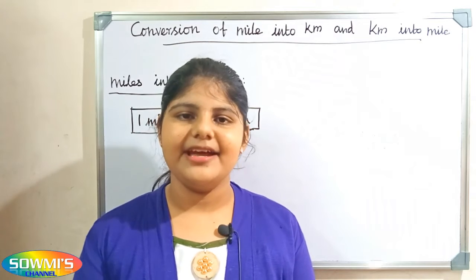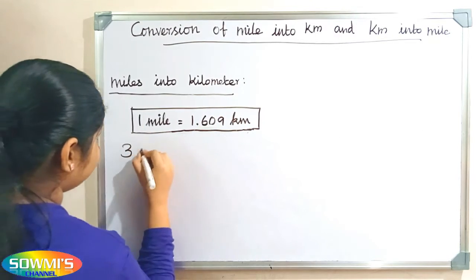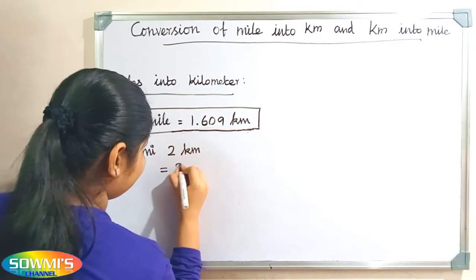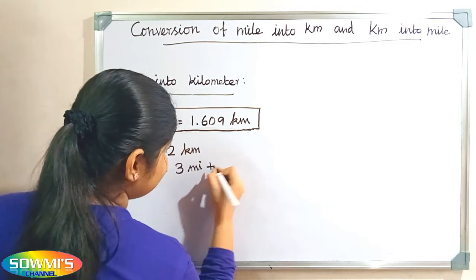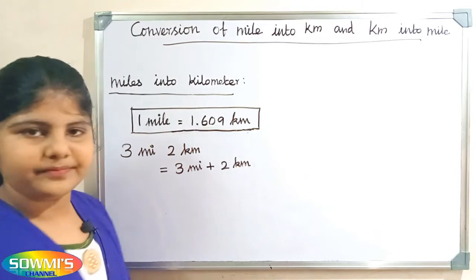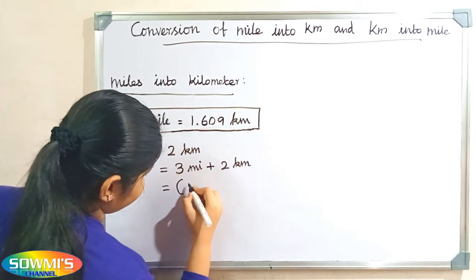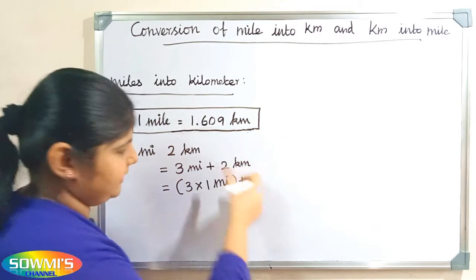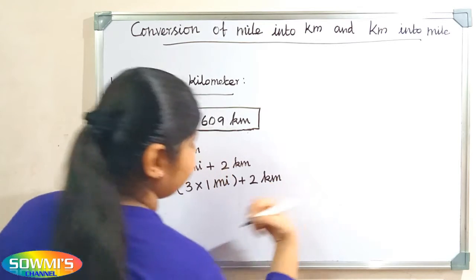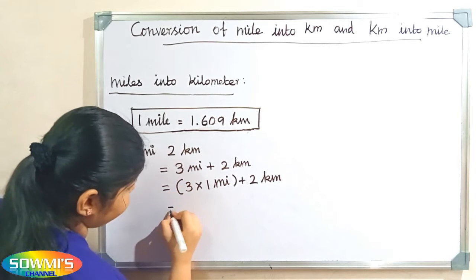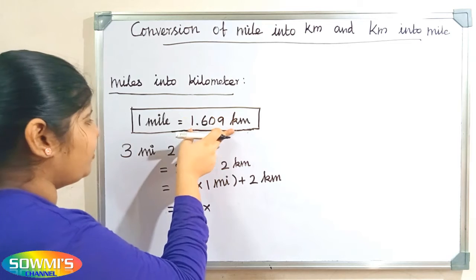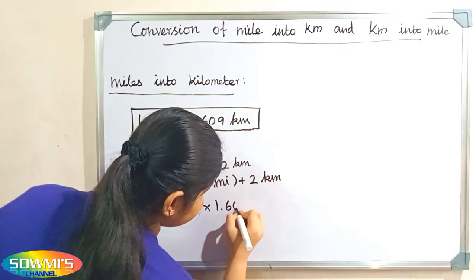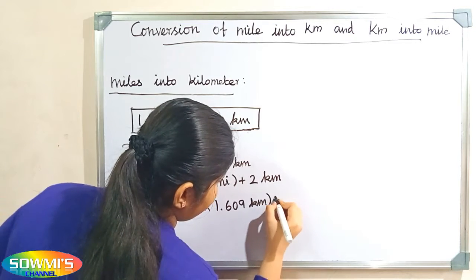Next we will take another example: 3 miles 2 kilometers. This can be written as 3 miles plus 2 kilometers. 3 miles can be written as 3 multiplied by 1 mile, plus 2 kilometers. Now we apply the formula and substitute 1.609 kilometers in the place of 1 mile, giving us 3 multiplied by 1.609 kilometers, plus 2 kilometers.